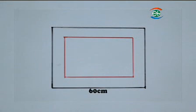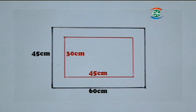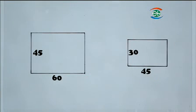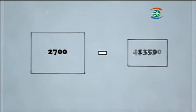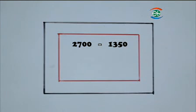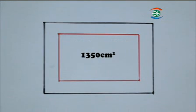If the frame is 60 cm long and 45 cm wide, a photo 45 cm long and 30 cm wide can be put inside. We can use the areas of two simple figures to calculate the area of the frame — in other words, the area of the outer rectangle minus the area of the inner rectangle. Using this method, the area of the frame comes to 1350 cm².